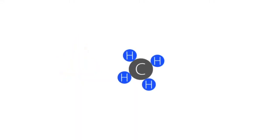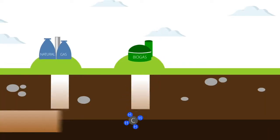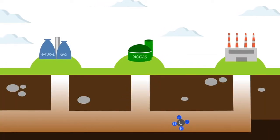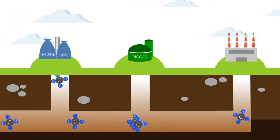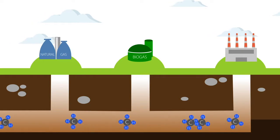Natural and biogas consist mainly of methane with a structural formula CH4. This gas is produced during the digestion of organic substances, for example, in sewage treatment plants and biogas plants.